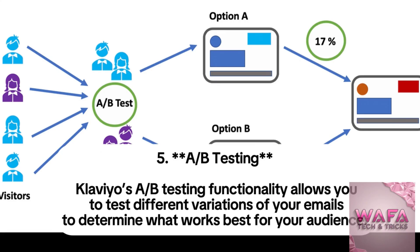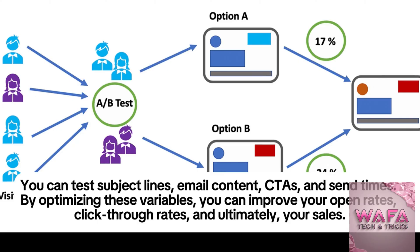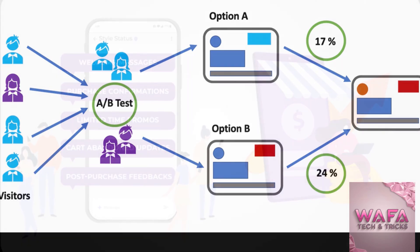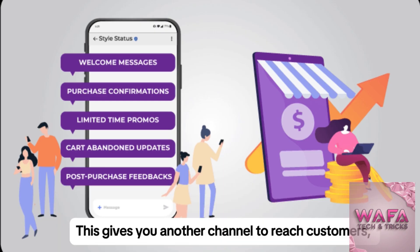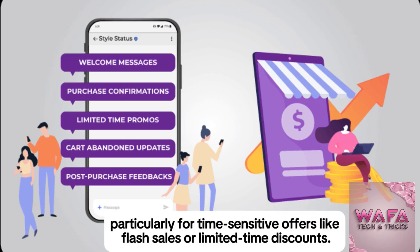Feature 5: A/B Testing. Klaviyo's A/B testing functionality allows you to test different variations of your emails to determine what works best for your audience. You can test subject lines, email content, CTAs, and send times. By optimizing these variables, you can improve your open rates, click-through rates, and ultimately your sales. Feature 6: SMS Marketing. In addition to email, Klaviyo also supports SMS marketing. You can send SMS messages alongside email campaigns or as standalone messages. This gives you another channel to reach customers, particularly for time-sensitive offers like flash sales or limited-time discounts.